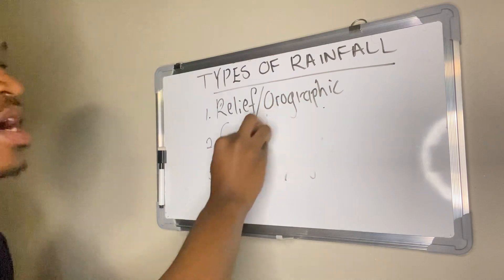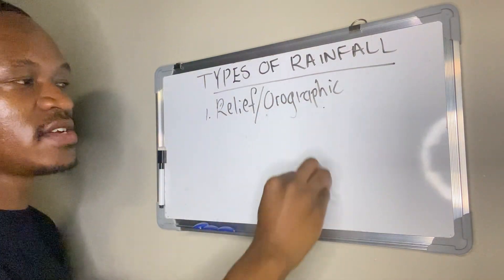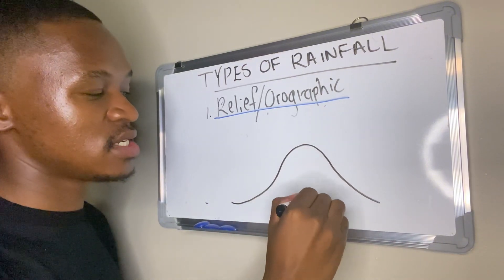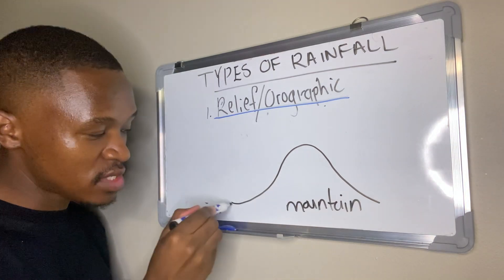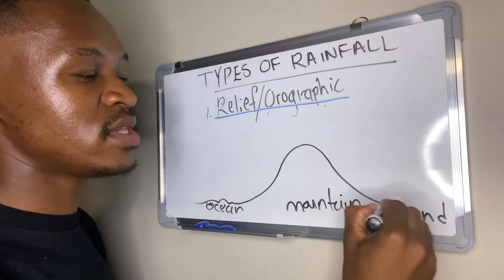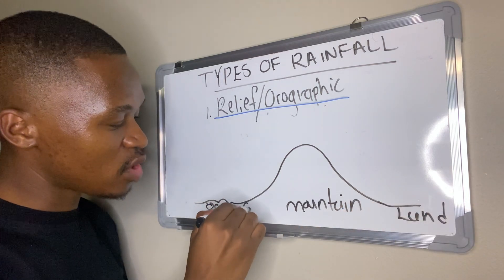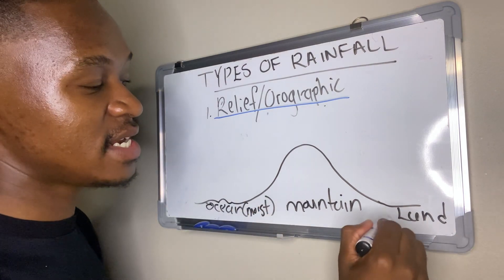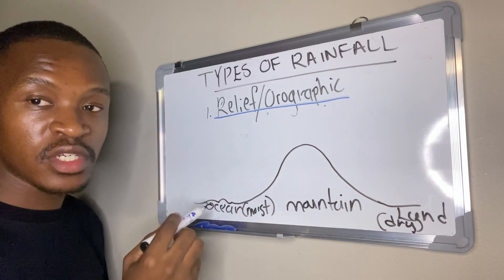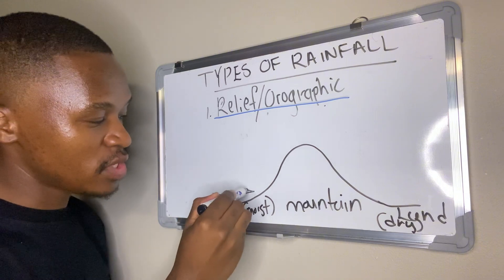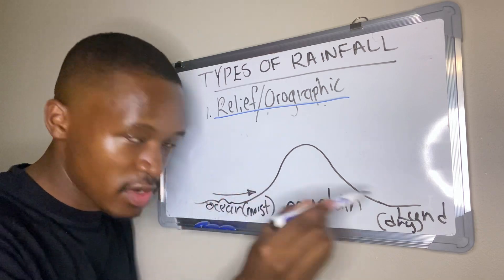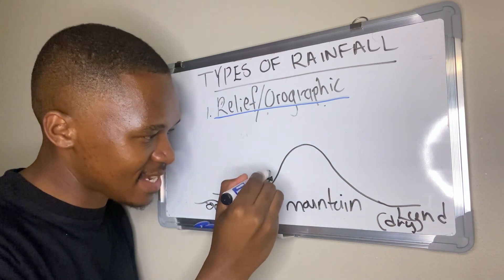Let's start with the first one, relief or orographic rainfall. This one occurs in mountainous areas. You have one side of the mountain in contact with the ocean and the other side in contact with the land. The ocean carries a lot of moisture — the ocean is moist while the land is dry. So on the side of the mountain in contact with the ocean, we are going to have moist air flowing towards the mountain. Since this air cannot penetrate through the mountain, it is forced to rise against it.